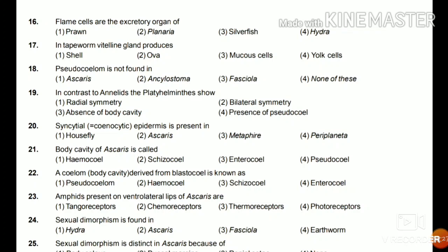Question 18: Pseudocoelom is not found in Ascaris, Ankylostoma, Fasciola, or none of these? The answer is Fasciola — pseudocoelom is not found in Fasciola as it is acoelomate and does not have any coelom. Pseudocoelom is found in Ascaris and Ankylostoma.